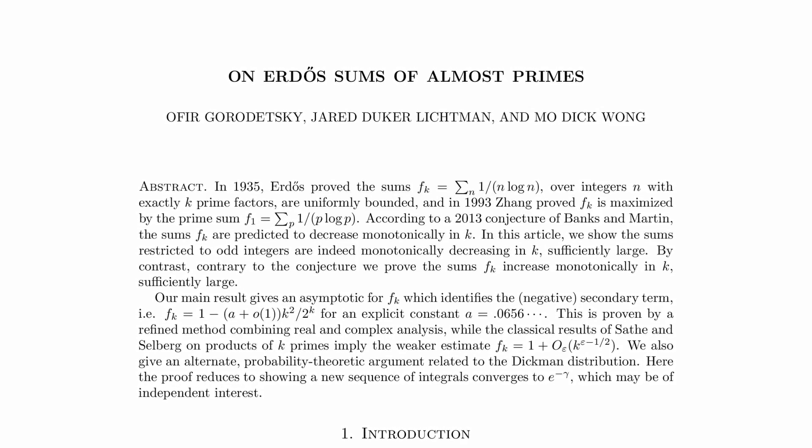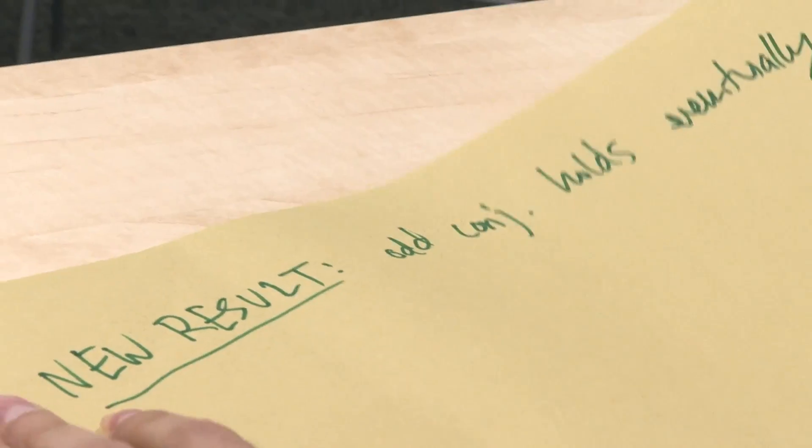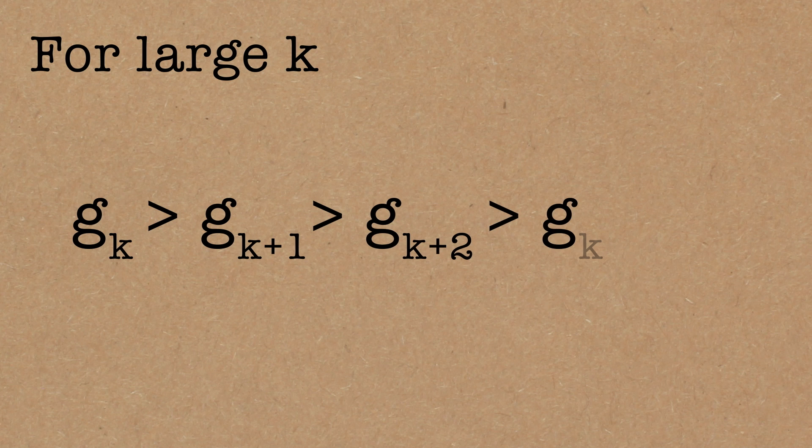New result, I guess hot off the presses, this odd version of the conjecture holds eventually. So let me be a little bit more precise. We show that there's a large enough constant k where gk satisfies the property: gk is bigger than gk plus 1, is bigger than gk plus 2, and so on forever. We don't necessarily know that the whole chain of inequalities is working, but we know at least far enough down the chain that this starts to kick in.